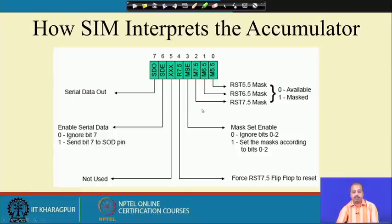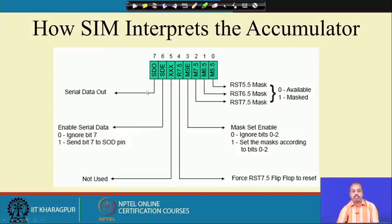Since the same SIM instruction is used for both serial data transmission and interrupt masking, there are two guard bits. SDE is one guard — it is set to 1 only when doing serial data transmission, otherwise 0. Similarly, if using SIM for serial data and not for mask setting, the MSE bit should be 0 so mask setting is ignored.